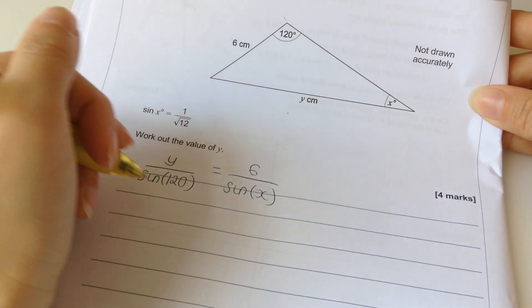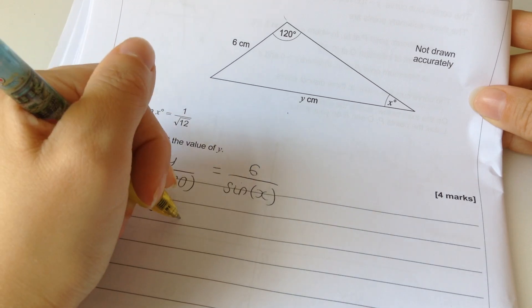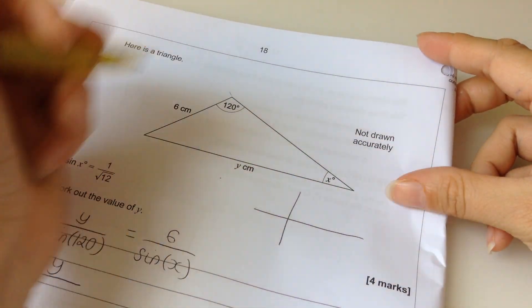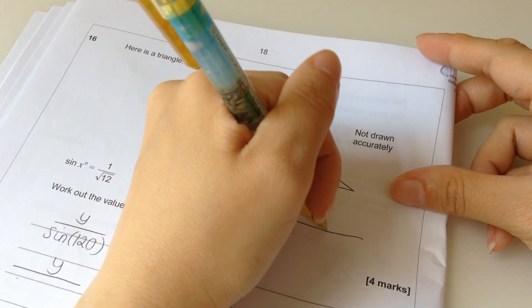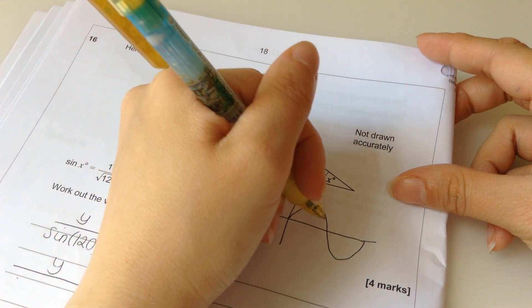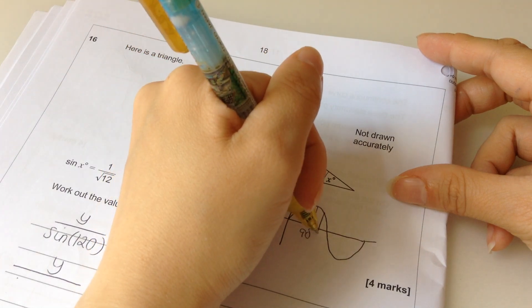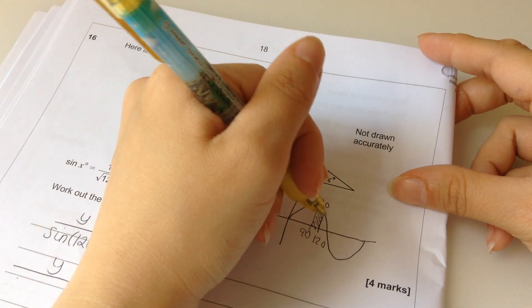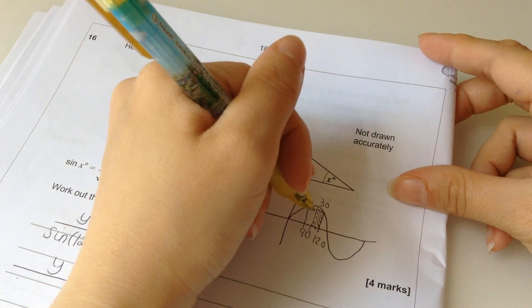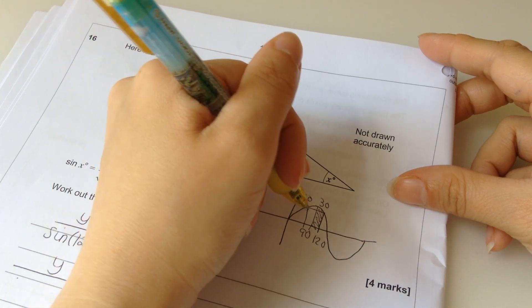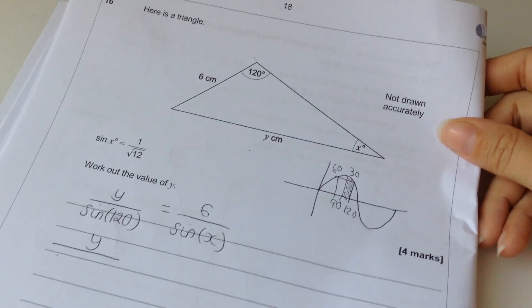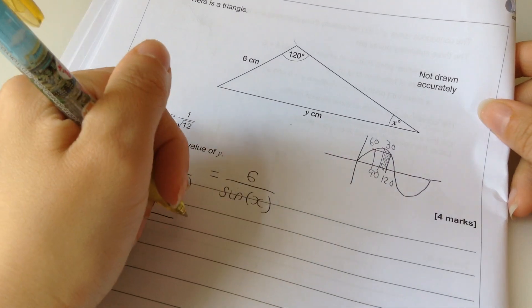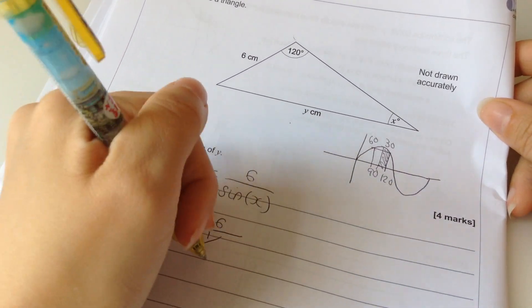We know that sine x is 1 over root 12. Right, so, hang on. Let's deal with the sine 120 first. Okay. So, that's not one of the ones we had to remember. But if I just do a cheeky sketch. That's 90. 120 is 30 away from 90. And it's symmetrical. So, if I go 30 backwards, it's just going to be the same. So, actually, sine of 60 and sine of 120 are the same. And sine of 60 is root 3 over 2.